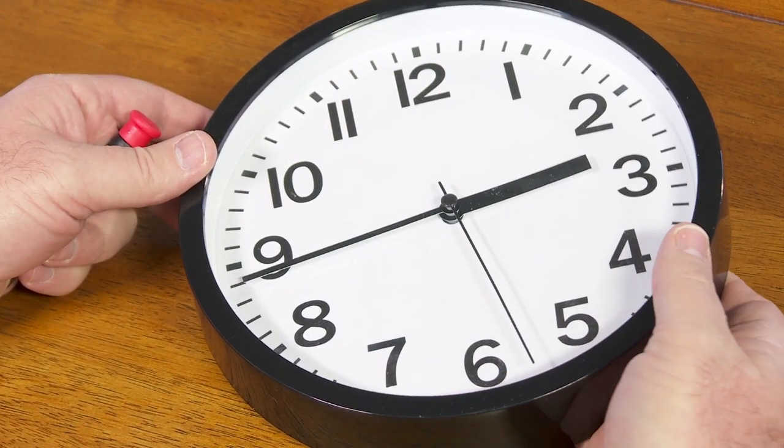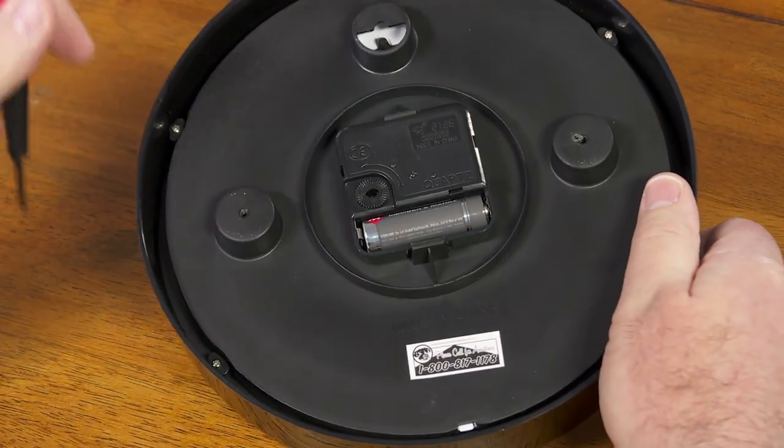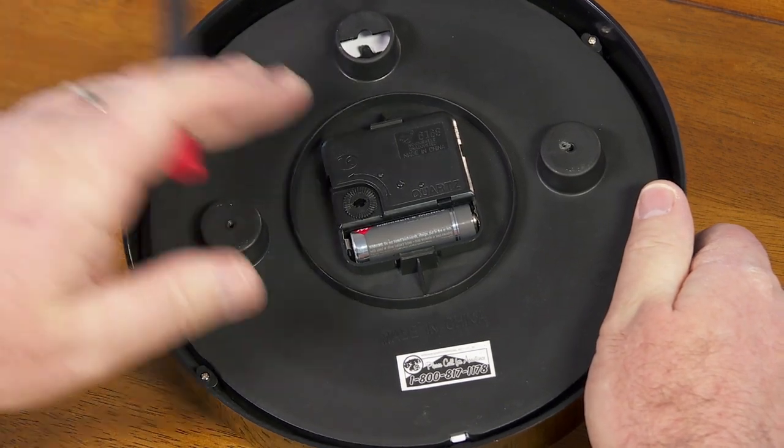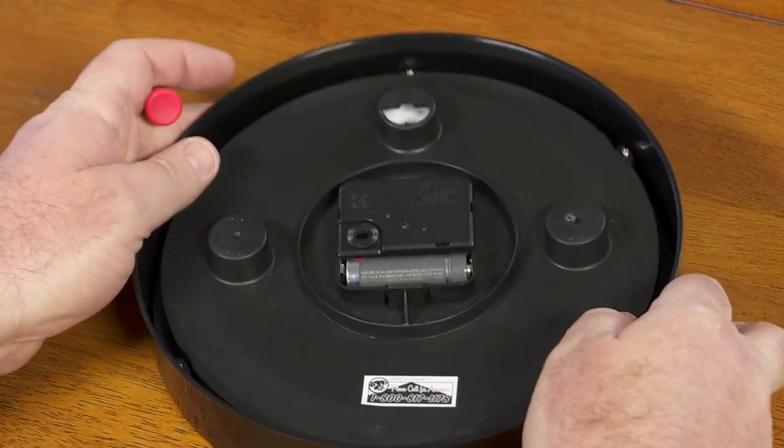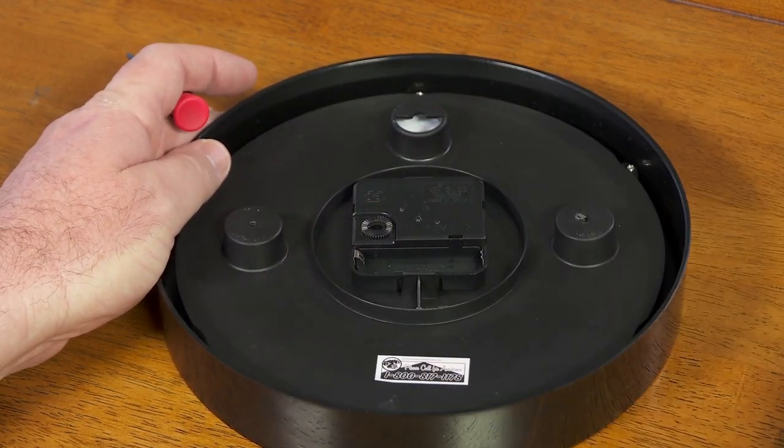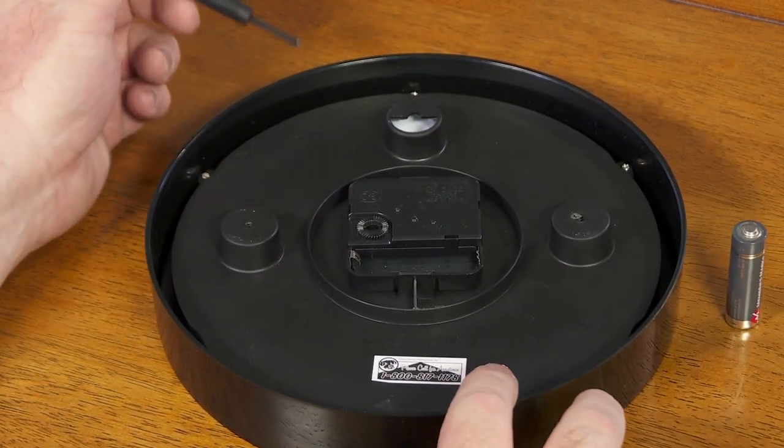Step one, you need to take the clock apart just a little bit. It has six screws around the back that are holding the back to the front. I'll take the battery out and remove these six screws.